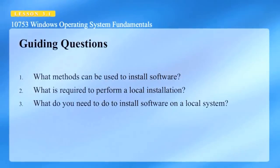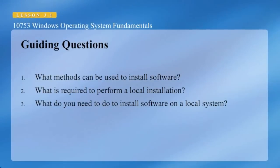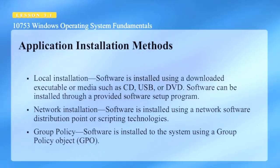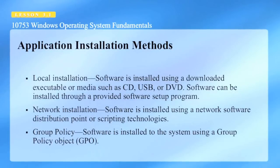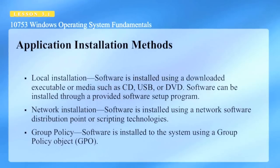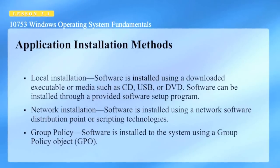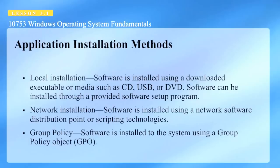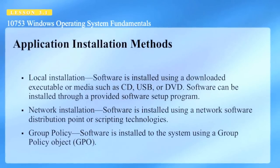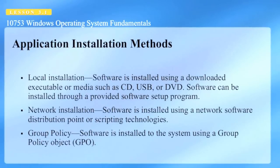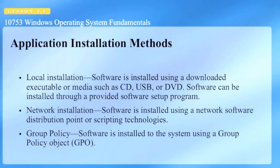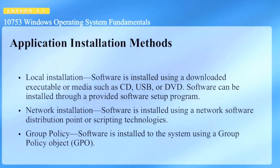When it comes to installing applications, there are three different methods available. First, a local installation where the software is installed using a downloadable executable or media such as a CD, USB, or DVD, through a provided software setup program. Second, a network installation where the software is installed from a network distribution point or using scripting technologies.